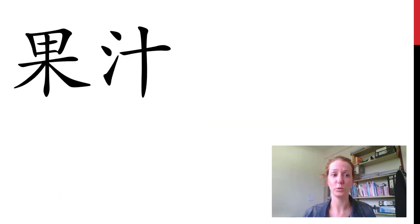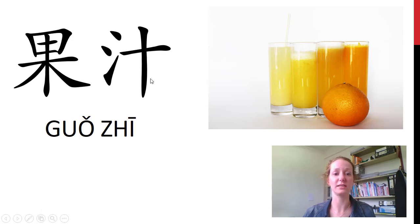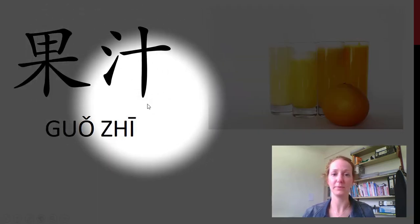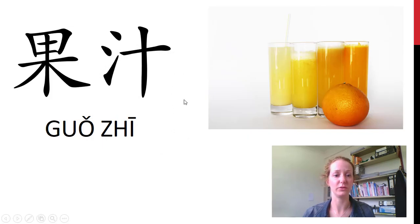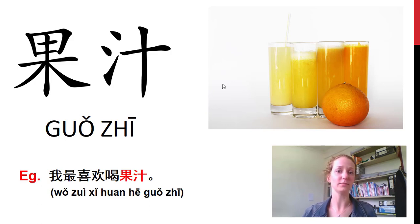你喜欢吗? 我不喜欢. 这是什么? 果汁. Fruit juice. From 水果, and 汁 is any type of juice. You can see the water radicals here — that gives you a clue to the liquid. 我最喜欢喝果汁。你呢?